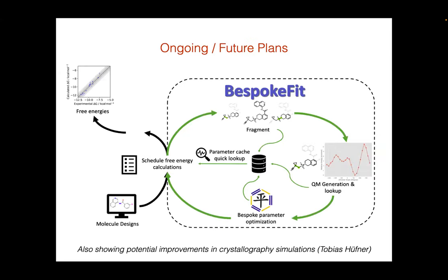Looking to the future, I would very much like this to be implemented as a routine tool for free energy calculations — so any time we set off 100 free energy calculations overnight to make predictions for our drug discovery efforts, can we have a loop where we're automatically parametrizing these torsion parameters in a bespoke manner? I'm also gratified to see that Tobias has been trying this out in crystallography simulations, where bespoke fit is showing encouraging improvements compared to the base force field. I'm sure there are many more applications out there.